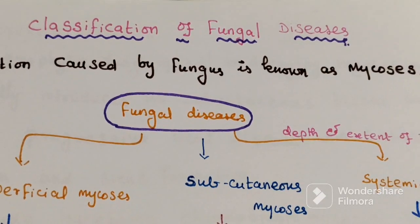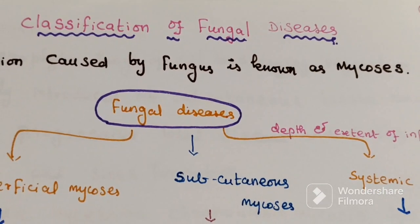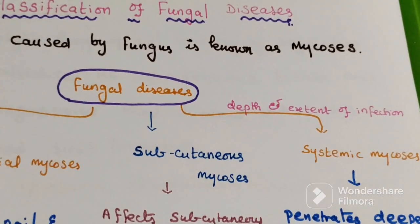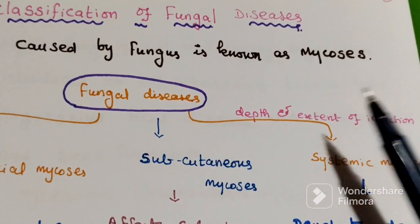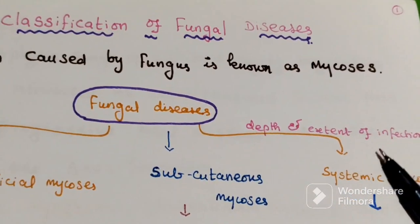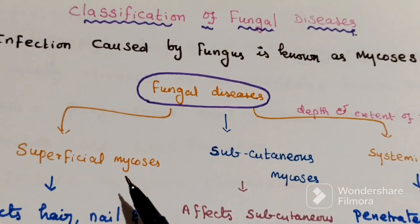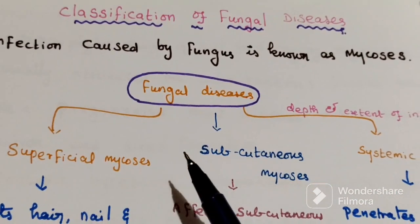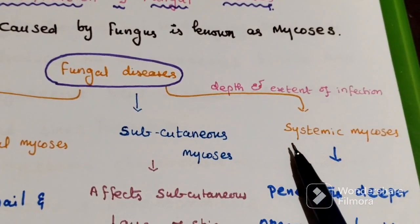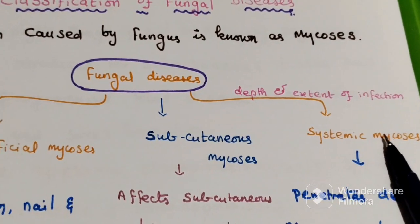This fungal infection or fungal disease can be classified into three major groups based on the depth and extent of infection. First one is superficial mycosis, second one subcutaneous mycosis, third one is systemic mycosis.